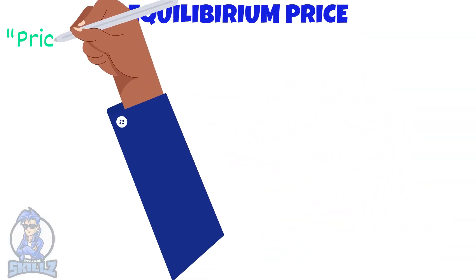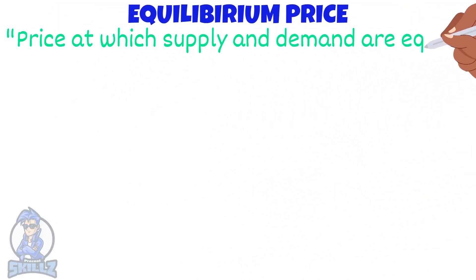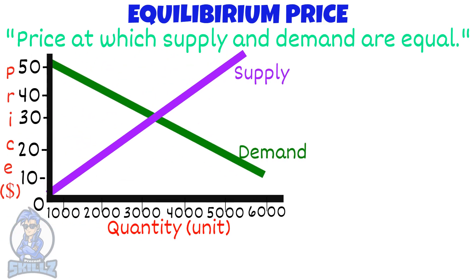The equilibrium is the price at which supply and demand are equal. To explain more, take a look at this graph. It shows the supply and demand curve for a product. The equilibrium price is 30, as at that point both supply and demand are equal — that is the only point at which they are equal.